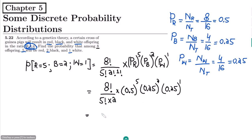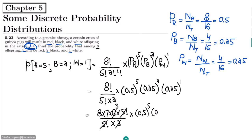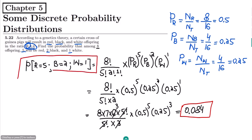From here, it would be 8 multiplied by 7 multiplied by 6 multiplied by 5 factorial, divided by 5 factorial multiplied by 2 — these cancel out — giving 336 divided by 2, which is 168. Combined with 0.5 raised to the power of 5 and 0.25 raised to the power of 3, when solved, we ultimately get 0.084, which is the solution to our multinomial probability question.